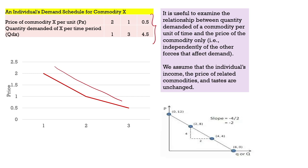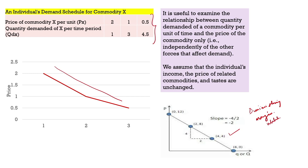The negatively sloping demand curve is guided by the idea of diminishing marginal utility. This concept will frequently occur in discussions of microeconomics. A rational consumer demanding less of a commodity when its price rises is guided by the law of diminishing marginal utility—as the consumer keeps consuming more of a commodity, the additional utility derived out of that commodity keeps on declining.